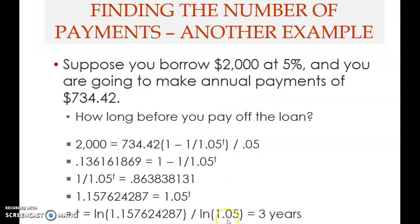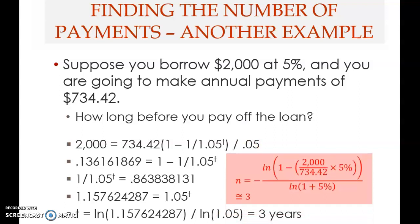We can use the formula: N equals the natural log of one minus (2000, the present value of annuity, divided by the payment) multiplied by the interest rate 5 percent, all divided by the natural log of one plus 5 percent. You get an answer very close to three, meaning you need three annual payments — therefore three years.